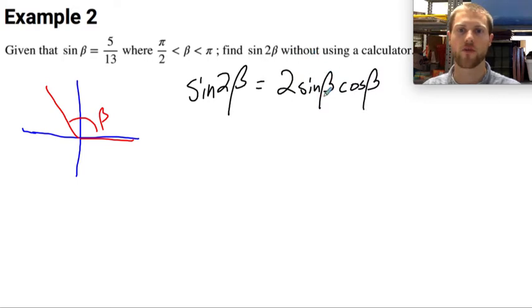I have the sine of beta. That's given to me. That's 5 thirteenths. Check. I do not have the cosine of beta. So now I need to find what the cosine of beta is.